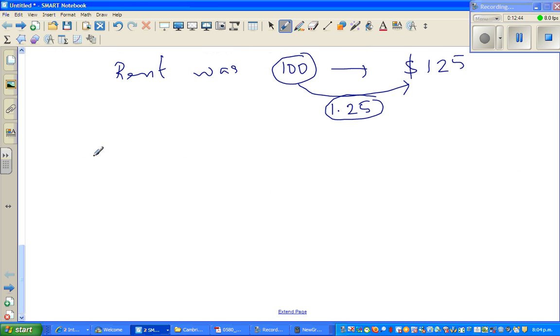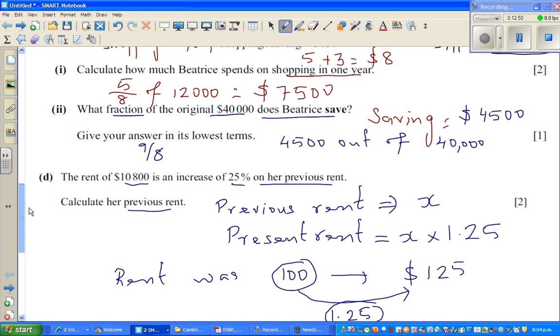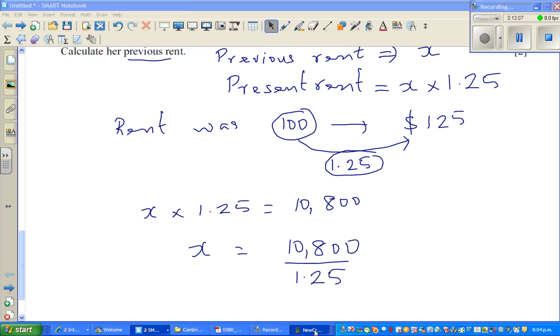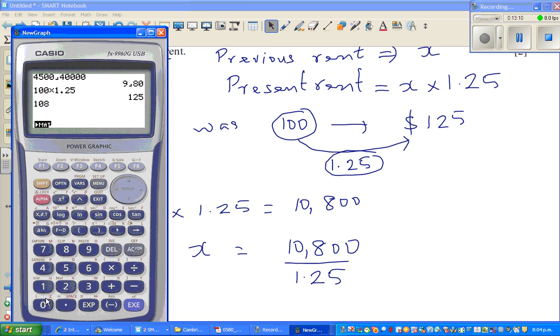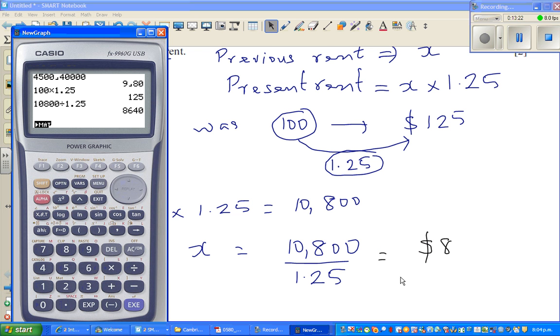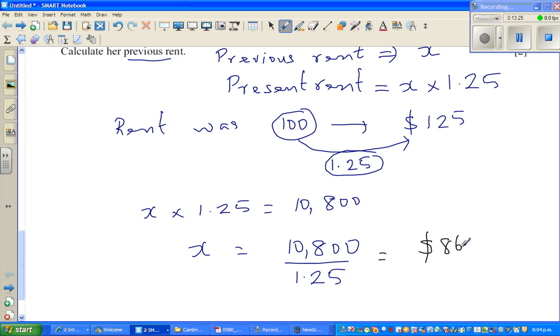So can you write now, X times 1.25 gives you the present rent, which is $10,800. So X is your previous rent. So X would be, dividing both sides by 1.25, is $10,800 divided by 1.25. So you can use a calculator. $10,800 divided by 1.25, which is $8,640. That's a pretty big rise. The answer was $8,640 was the previous rent.